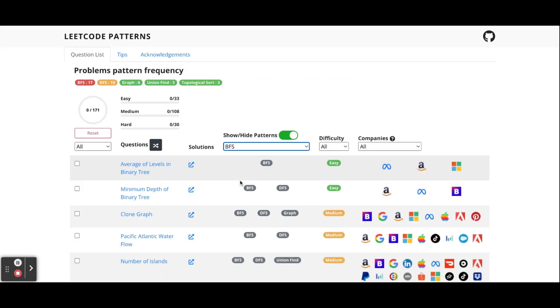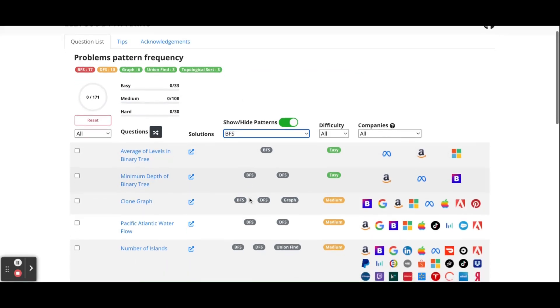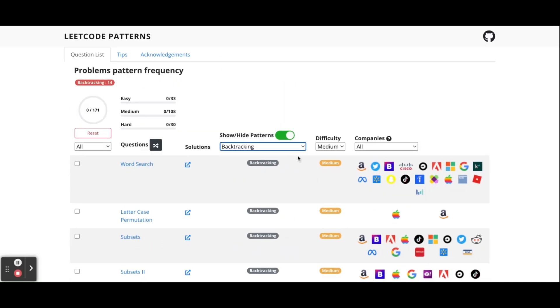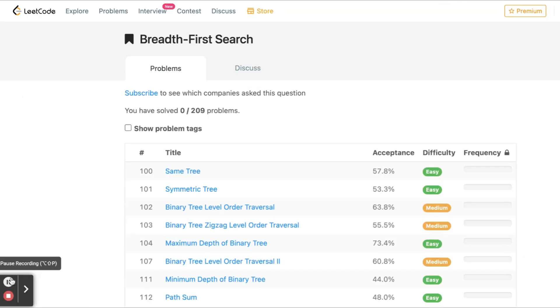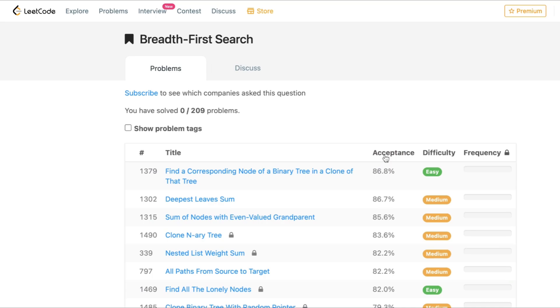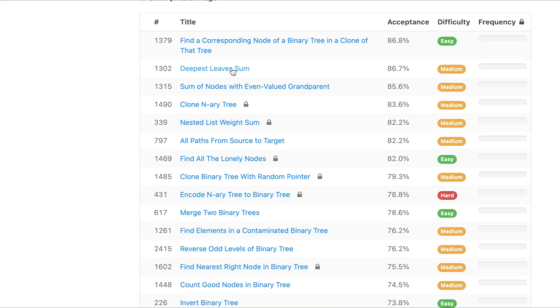A good website is LeetCode Patterns where you can find different patterns, and of course you can always develop your own pattern list later on. Pick a topic and solve problems with that. The recommended easy, medium, and hard problem ratio is 3 to 5 to 2. When you pick a topic, sort them by acceptance rate and frequency. Frequency is a premium feature so if you didn't buy premium you can just sort by acceptance rate.